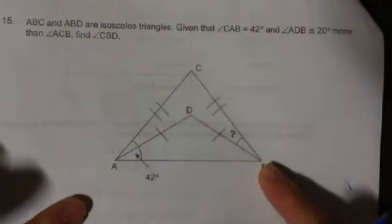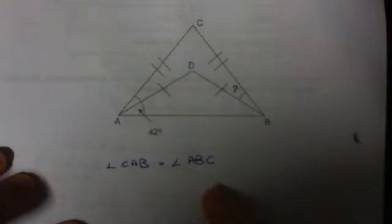Quite an easy question. First I know this is isosceles, so angle CAB is the same as angle ABC. Since it's isosceles, angle ACB is 180 degrees minus 42 degrees minus 42 degrees equals 96 degrees. So it's 96 degrees.